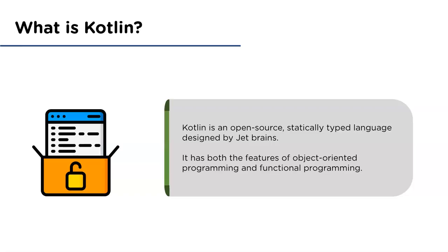Kotlin has both the features of object-oriented programming and functional programming. Kotlin is interoperable with Java, meaning both languages can share and use information with each other. Just like the Java compiler, the Kotlin compiler also generates bytecode which can run on the JVM.